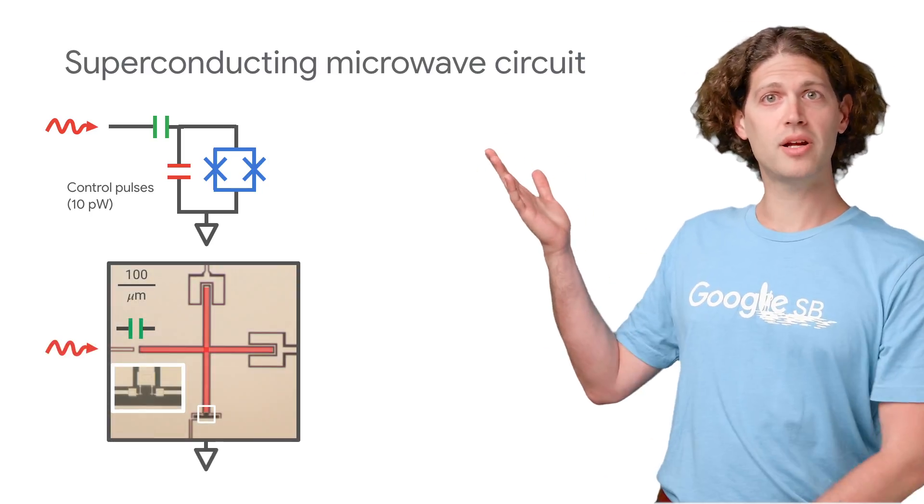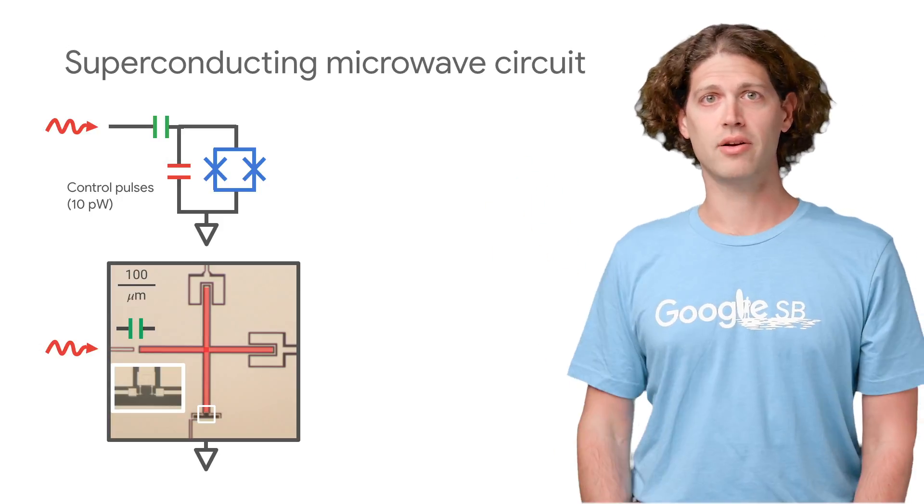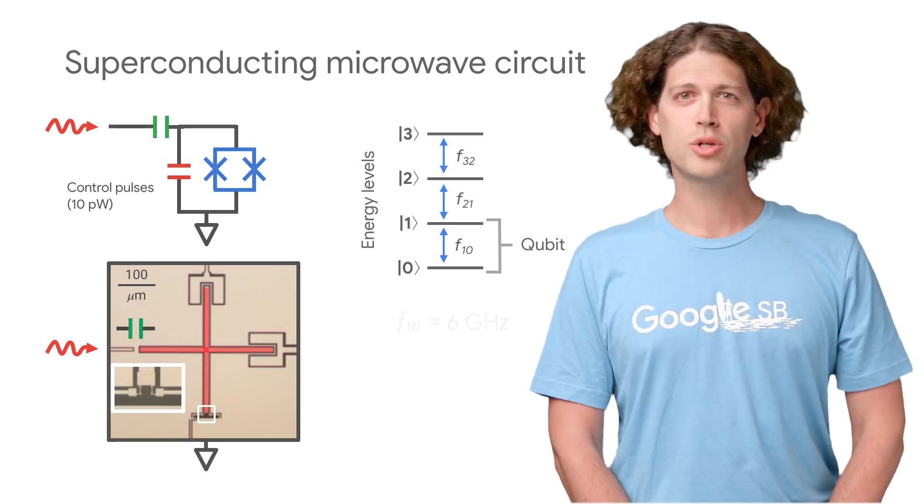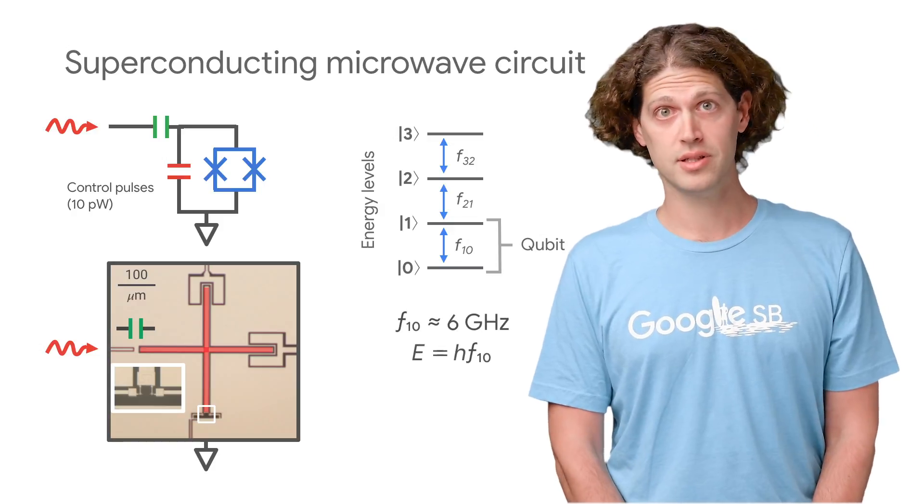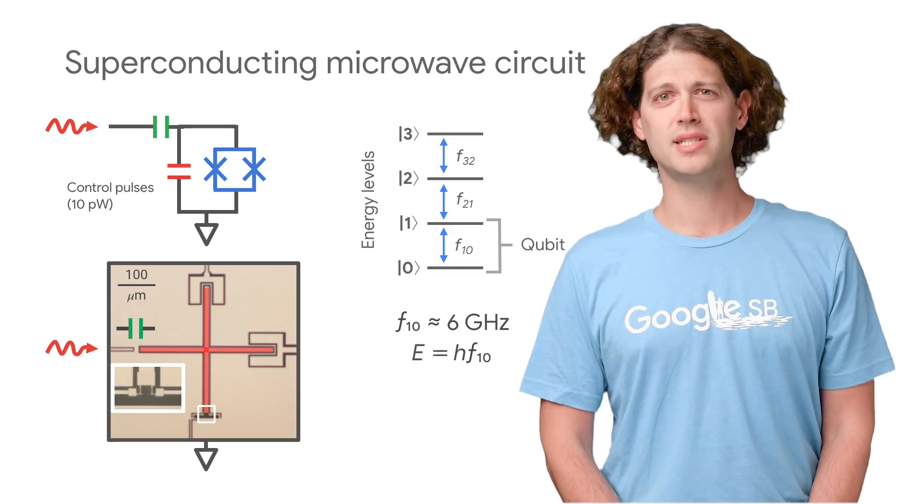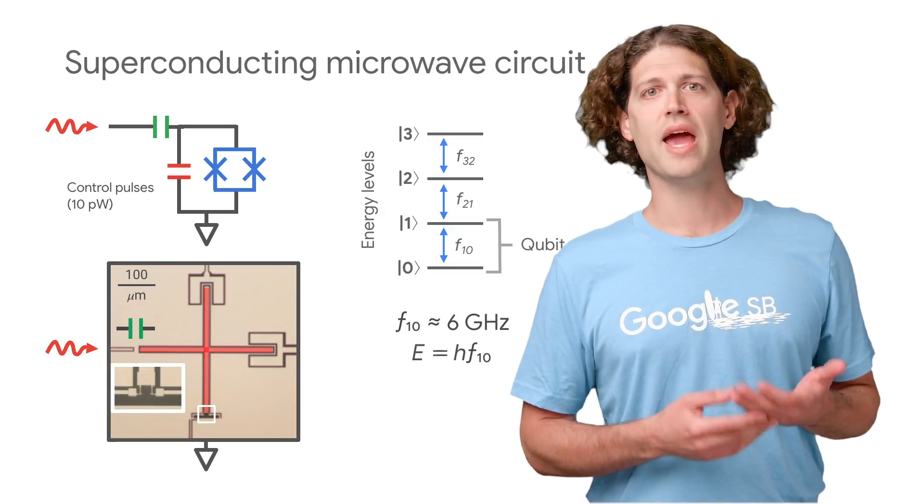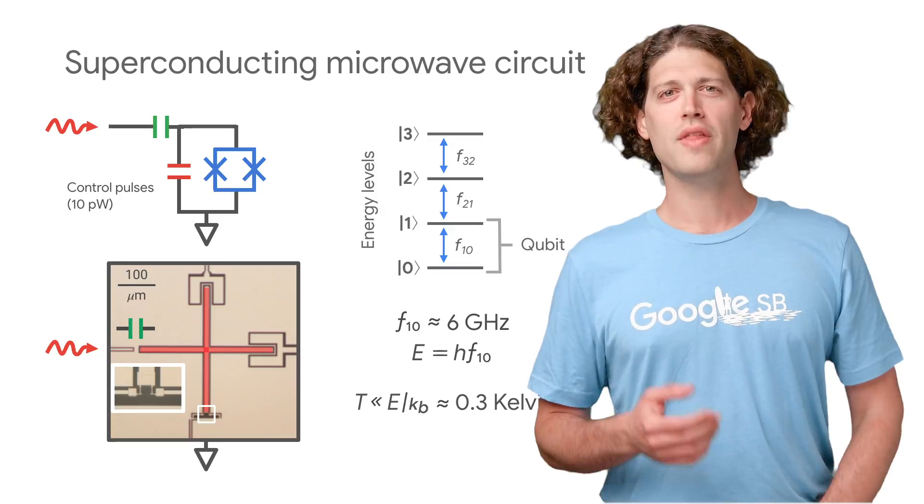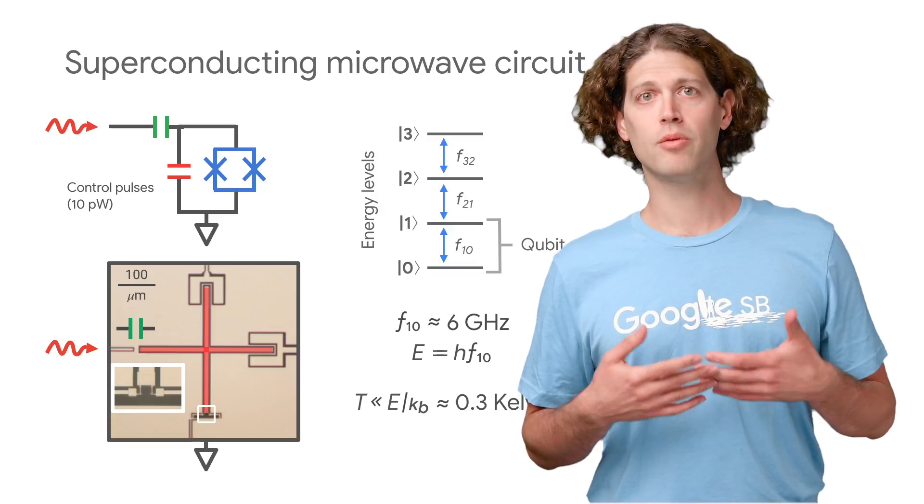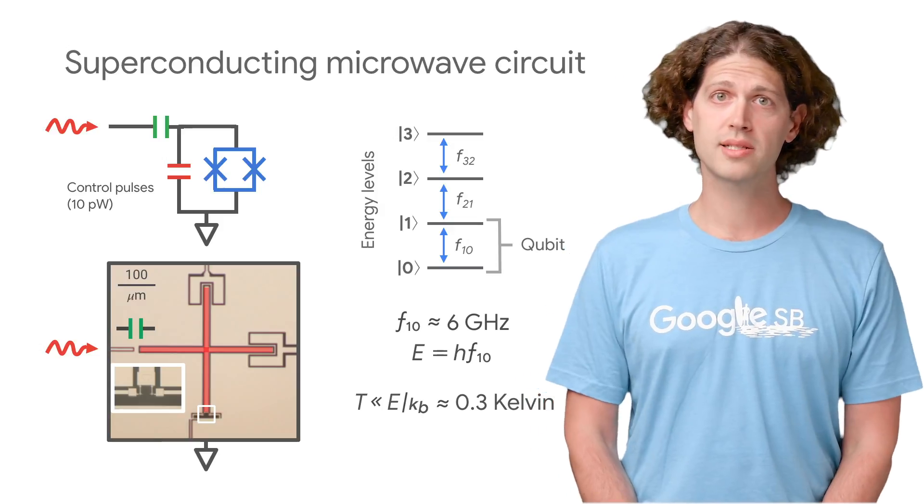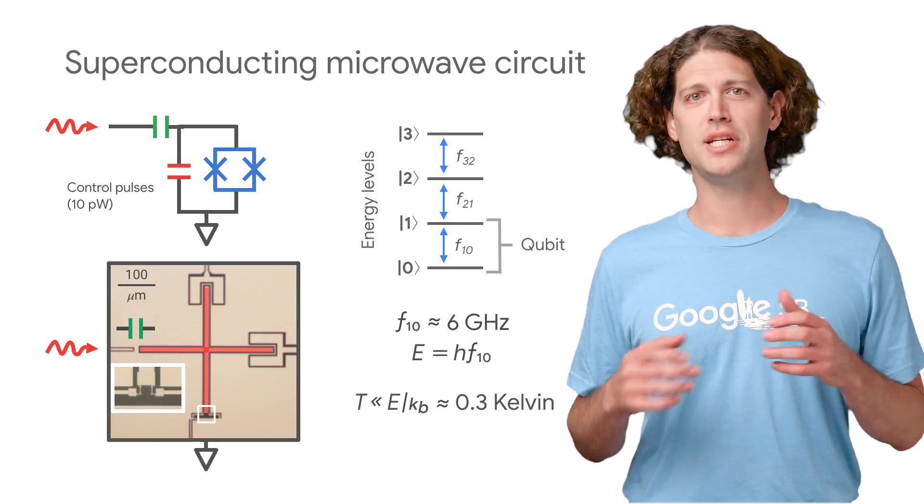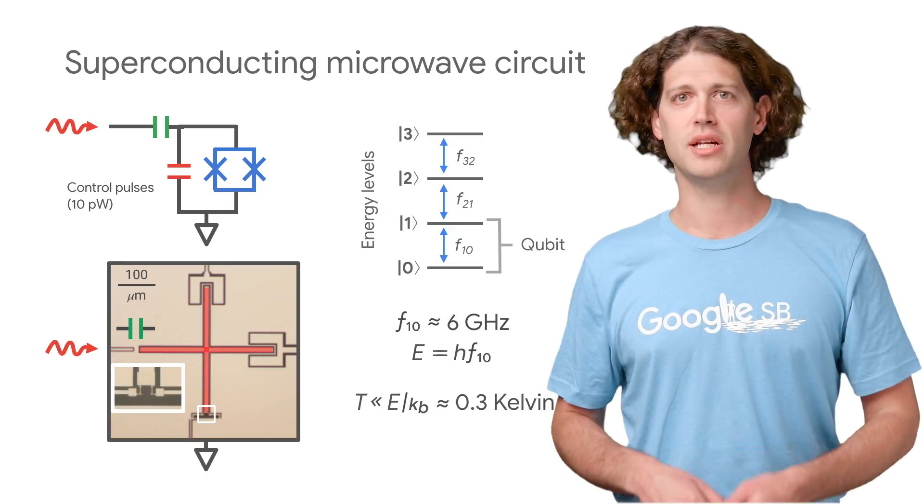Here's a picture of a superconducting qubit along with a circuit diagram. The crosses indicate Josephson tunnel junctions, which are non-linear superconducting inductors. We pick the resonance frequency of our oscillators to be about 6 gigahertz, which sets the energy difference between the zero and one states. That's a low enough frequency that we can build control electronics from readily available commercial parts, but also high enough that the ambient thermal energy doesn't scramble the oscillation and introduce errors.